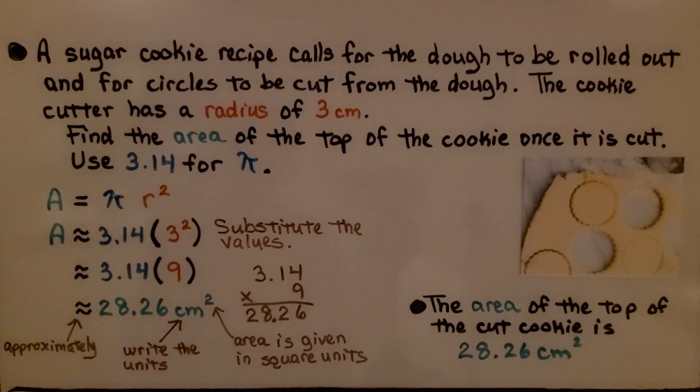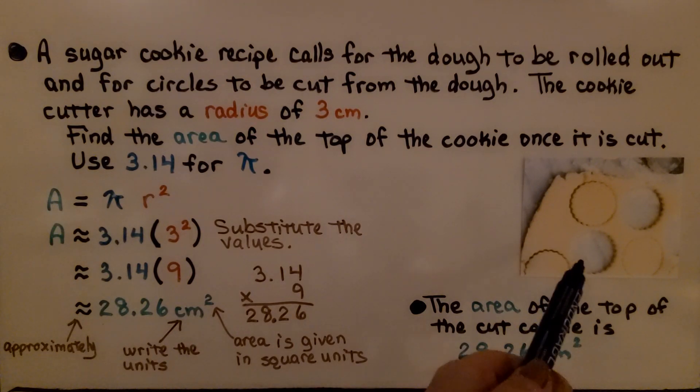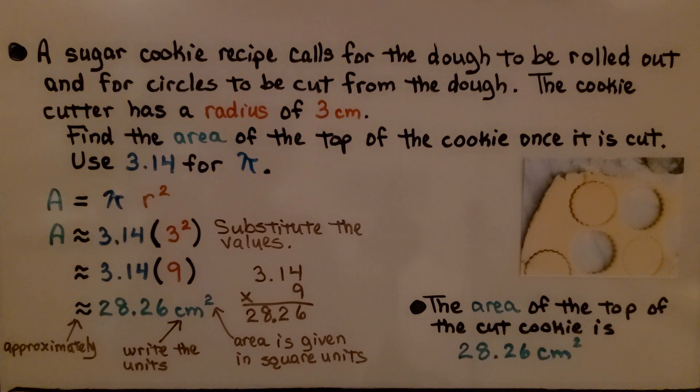A sugar cookie recipe calls for the dough to be rolled out and for circles to be cut from the dough. The cookie cutter has a radius of 3 centimeters. Find the area of the top of the cookie once it is cut.